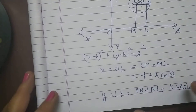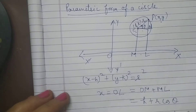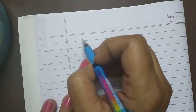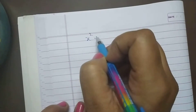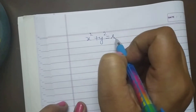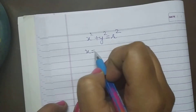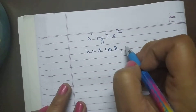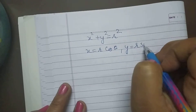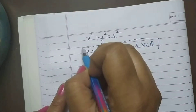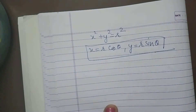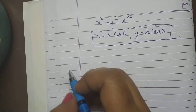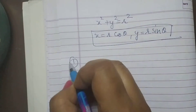And if you have the standard equation of a circle, x squared plus y squared equals R squared, then the parametric representation is: x equals R cos theta and y equals R sin theta. Keep this in mind. Now we will move to the questions.